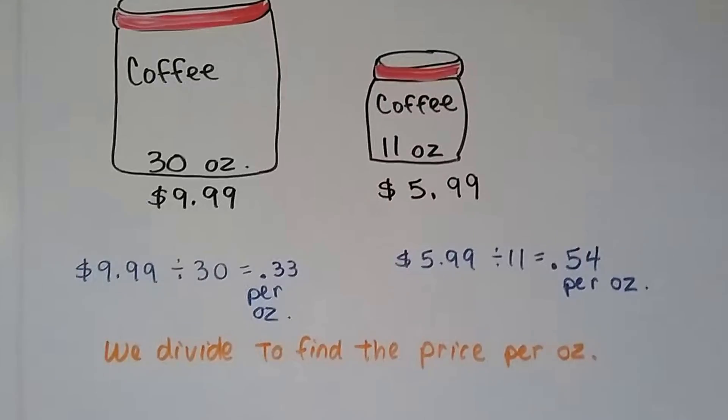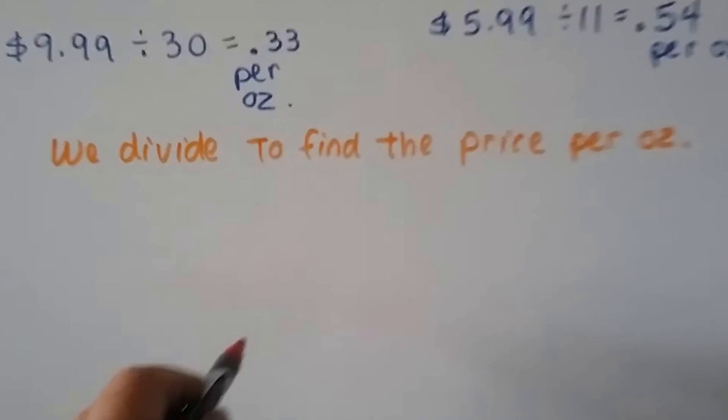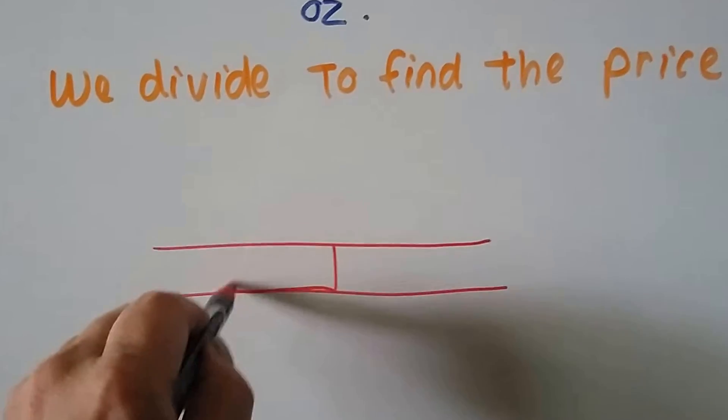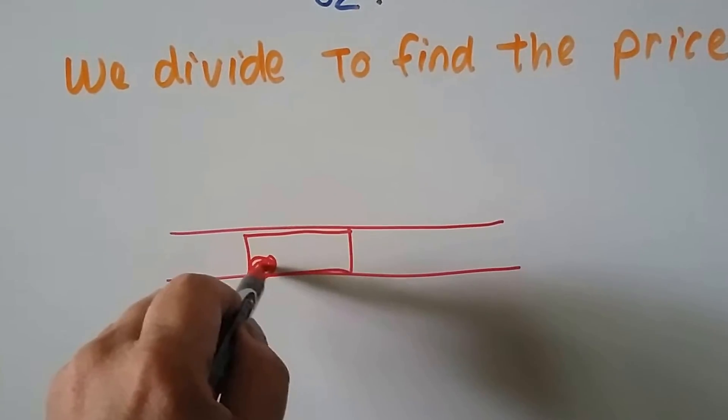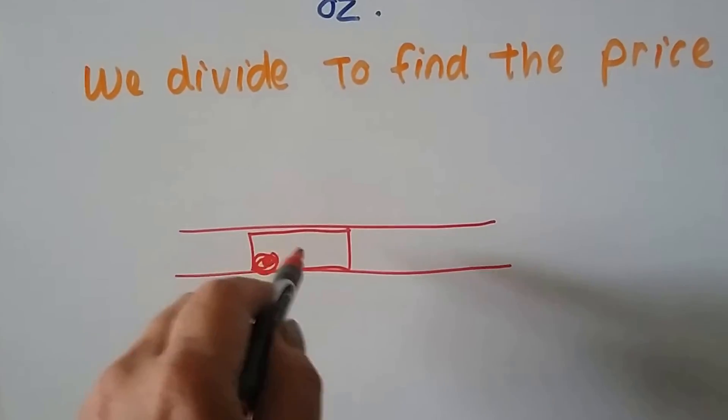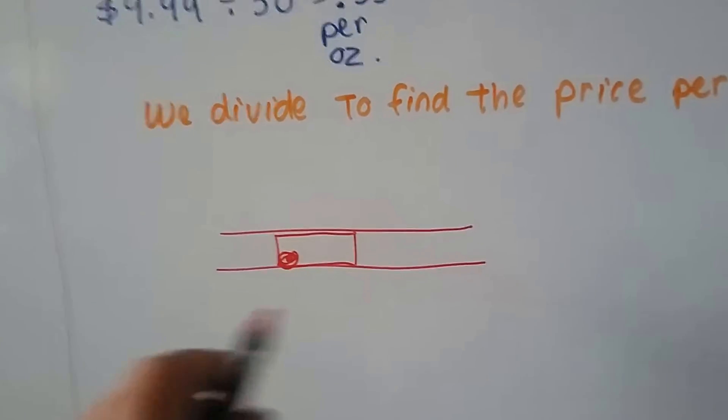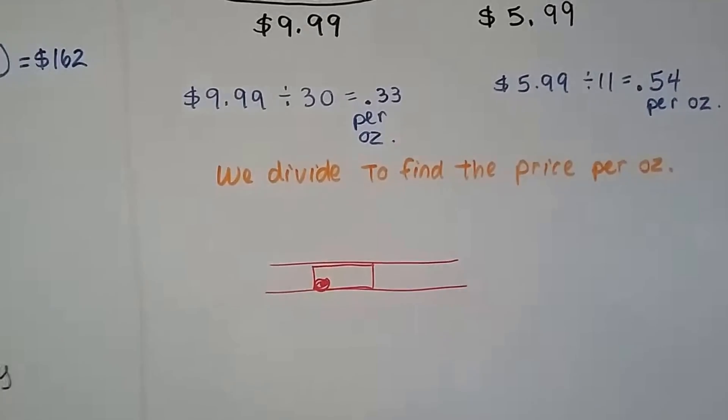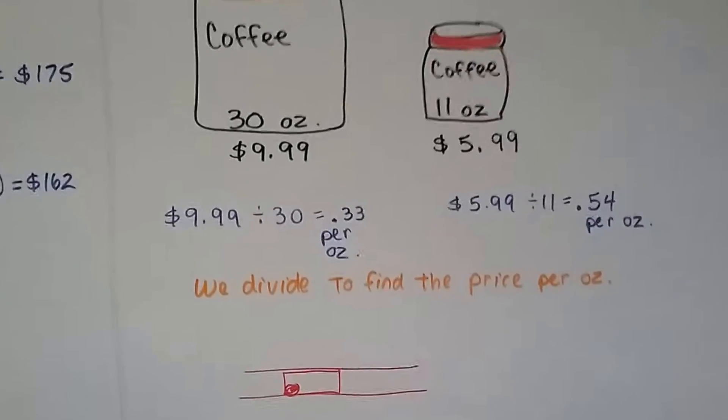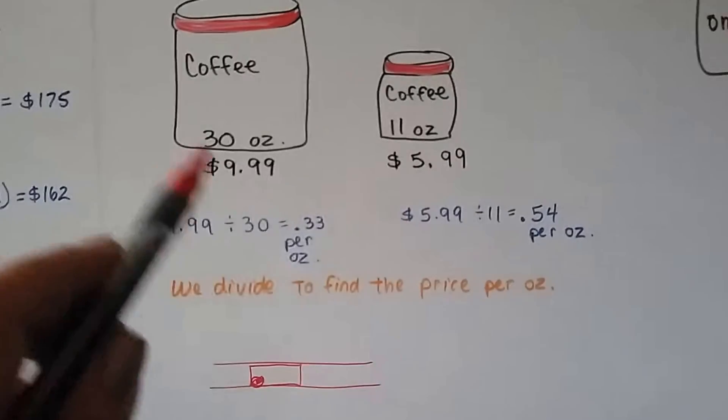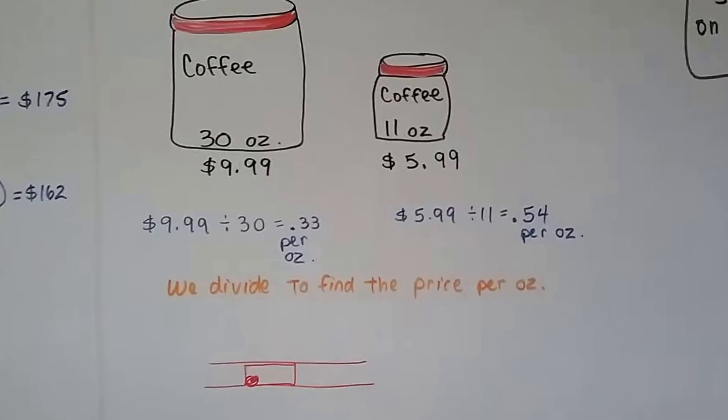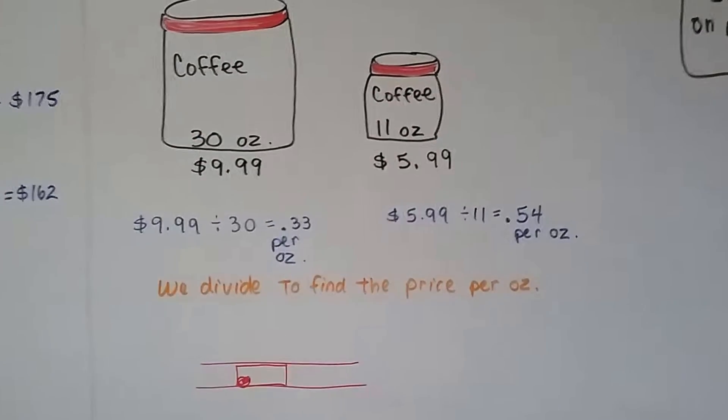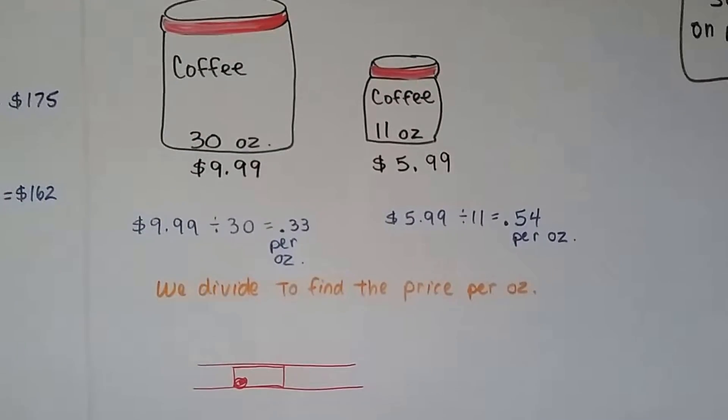We divide to find the price per ounce. When you're at the grocery store, they actually have on the shelf, you'll see the little price tags. You'll see down in one of the corners, it'll say price per ounce, or price per gram, or whatever the per is. It'll help you decide which is the better deal. If it doesn't have that, you can do it yourself. You can pull out your phone calculator and just divide the amount it's selling for by how many ounces are in it, and you'll find the better value.